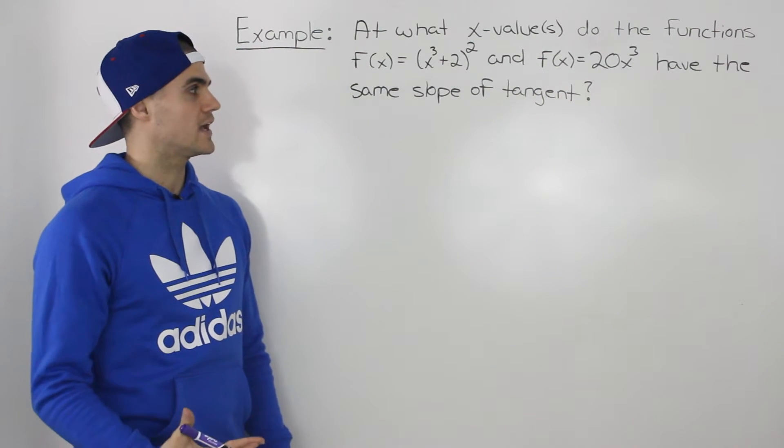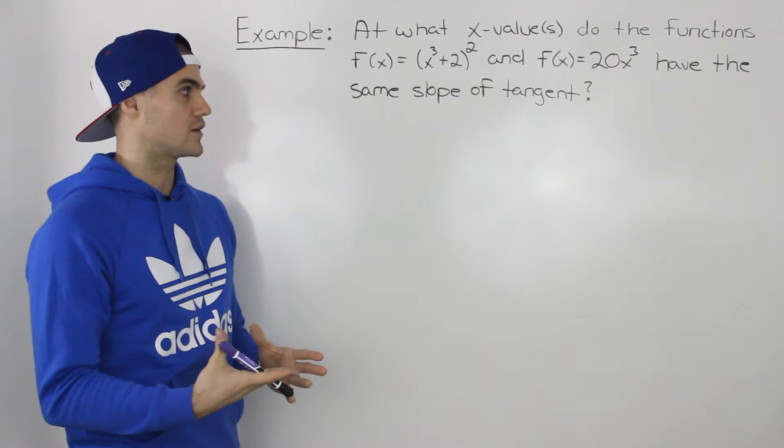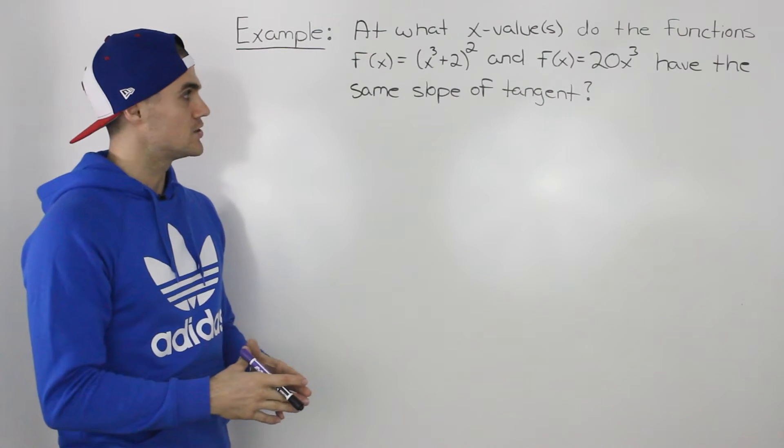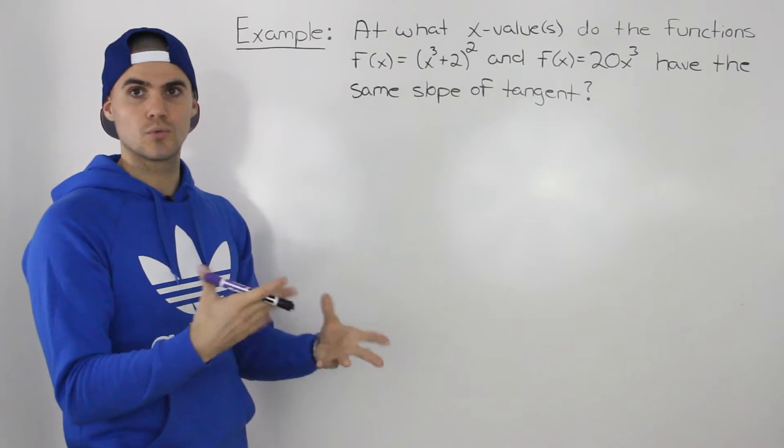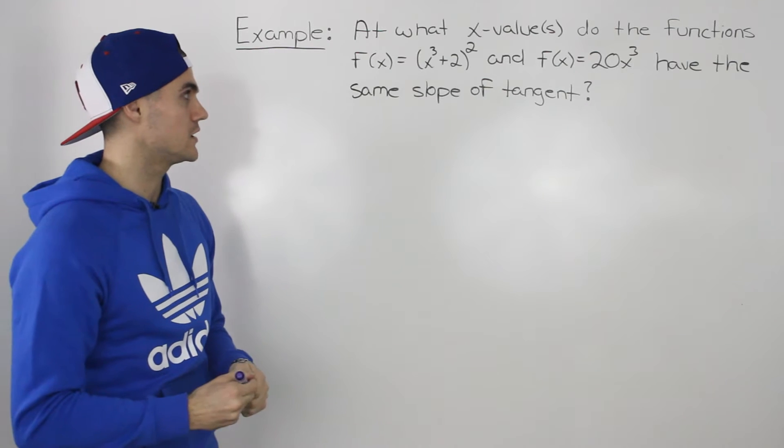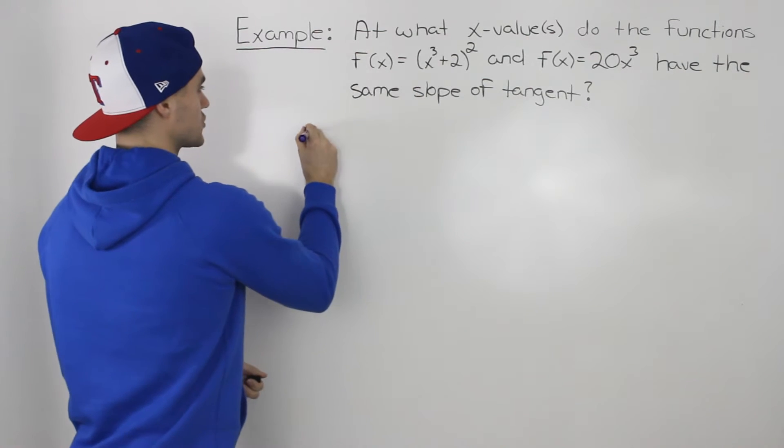We know the slope of a tangent is represented by the derivative of a function at any x value. So if we can find the derivatives of both of these functions and then make them equal, we can solve for those x values where the derivatives will be equal.